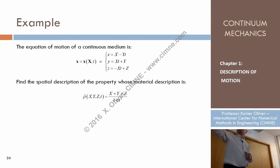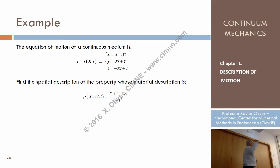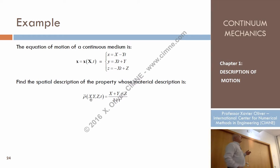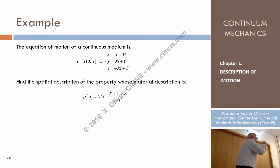What I want to do is obtain, from this and from the equations of motion, the spatial description of the density — and see what the spatial description of the density looks like with respect to that. What I intend to do is find a function in which, instead of capital X, capital Y, capital Z, there is a small x, a small y, a small z, but representing the same physics.